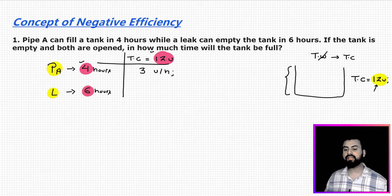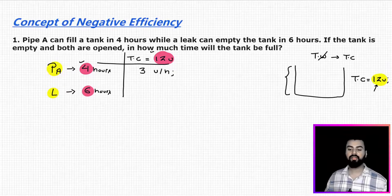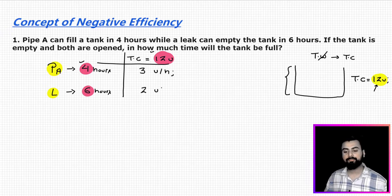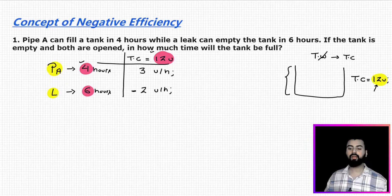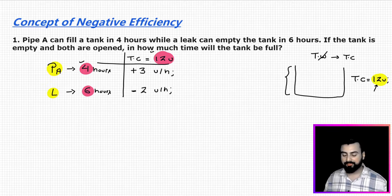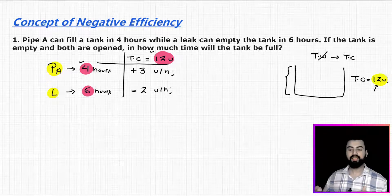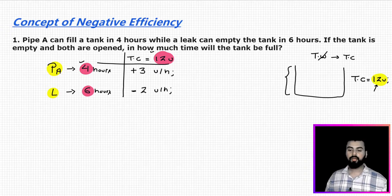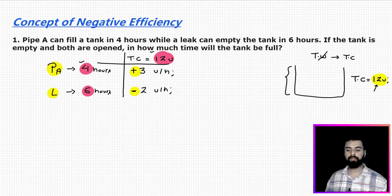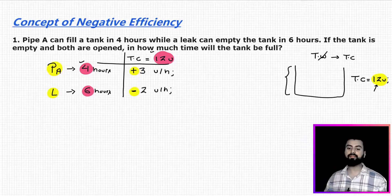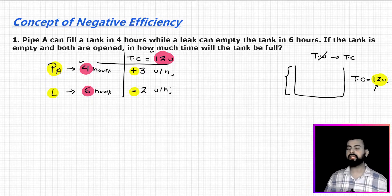Now, the leak is emptying 12 units in 6 hours, so its efficiency is 12 divided by 6, which is 2 units per hour. But since the leak is working in the negative direction, I will use a negative sign. The pipe is filling, so I use a positive sign in front of 3. Positive sign represents positive work, negative sign represents negative work. Always use positive or negative sign — positive for positive work, negative whenever an entity works in the opposite direction.